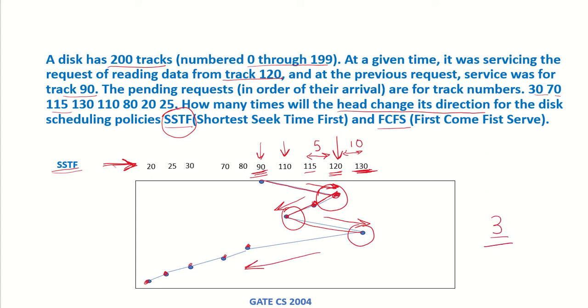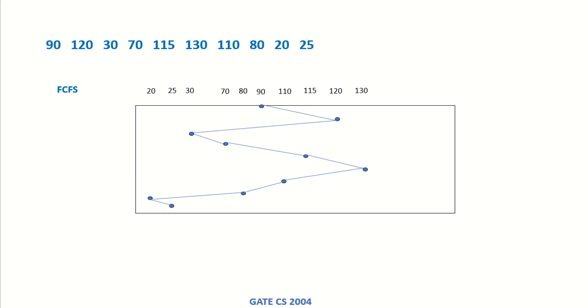Now let's take a look at first come first serve. 90 has been processed and 120 is currently being processed. The next request is for 30. This is a first come first serve, so it will have to move to 30. Then the next request is for 70, so the head will move to 70, then onwards to 115, 130.